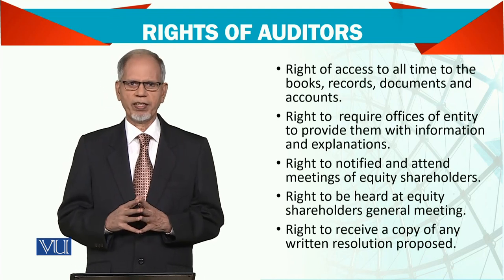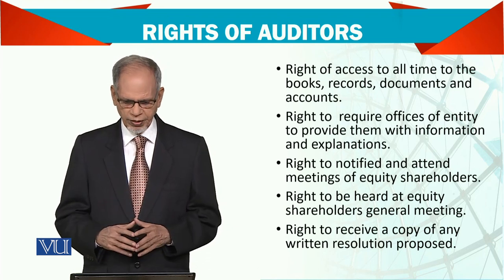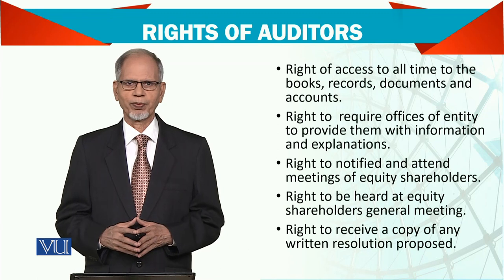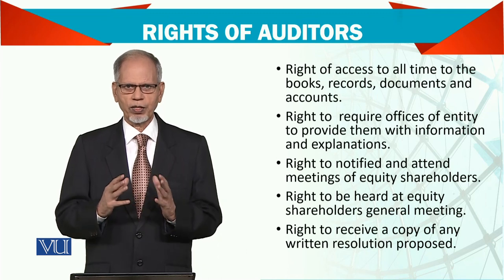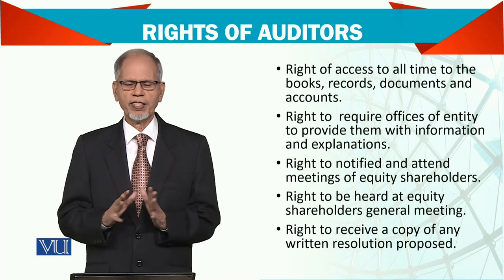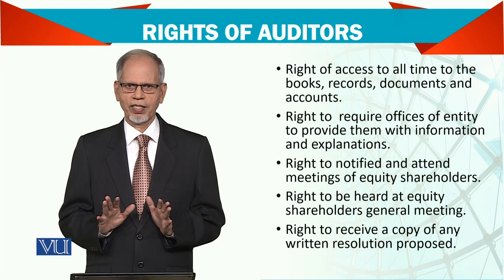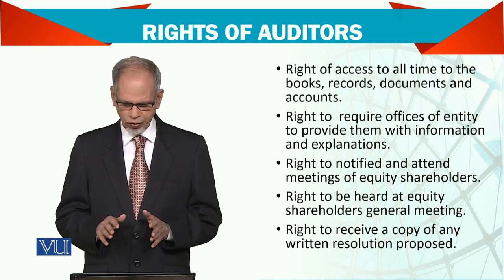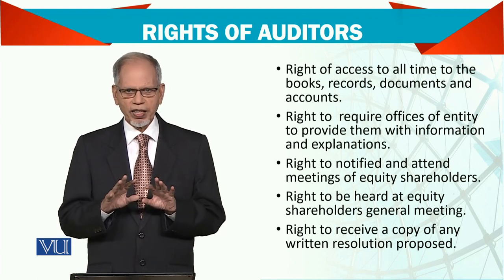What rights does an auditor have when appointed? Number one: the right of access at all times to the books, records, documents, and whatever else he needs for the purpose of his audit. He is supposed to demand these from the client, and the client is supposed to provide all those details. He also has the right to require officers of the entity to provide information and access — he needs a proper working atmosphere.